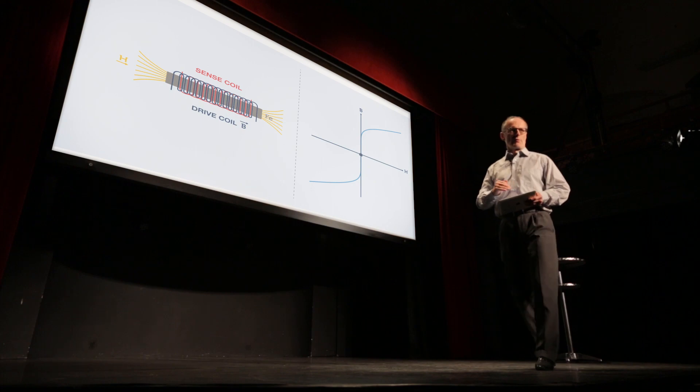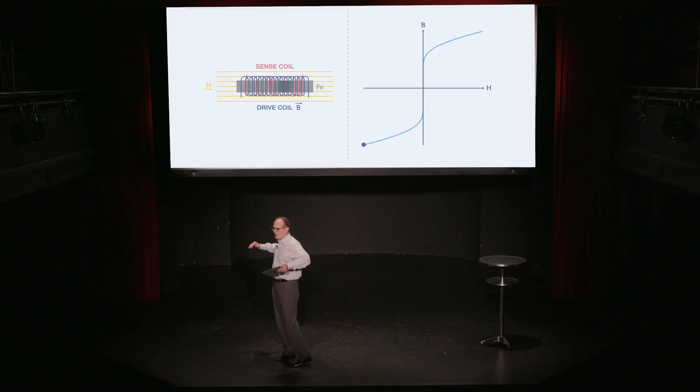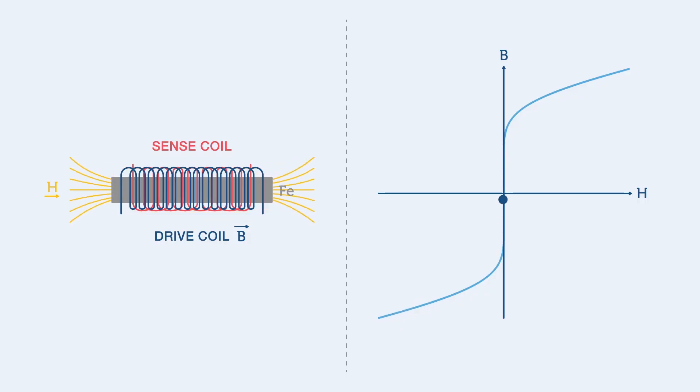And then as it desaturates, that process is reversed, and all that flux is sucked back in. And then the whole process is repeated once again when we get to the bottom of the hysteresis cycle as it reaches the saturation point in the negative direction.